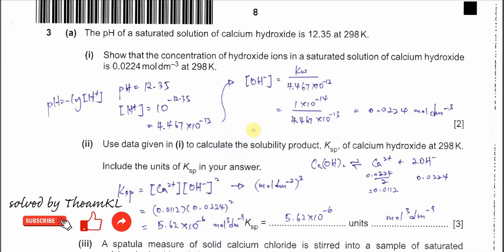Question 3a: the pH of a saturated solution of calcium hydroxide is 12.35 at 298 K. Part one: show that the concentration of hydroxide ion is 0.0224 mol per dm³. We start from the pH. pH is negative log of the concentration of hydrogen ion, so the concentration of H⁺ is 10^(-12.35), giving 4.467 × 10⁻¹³.